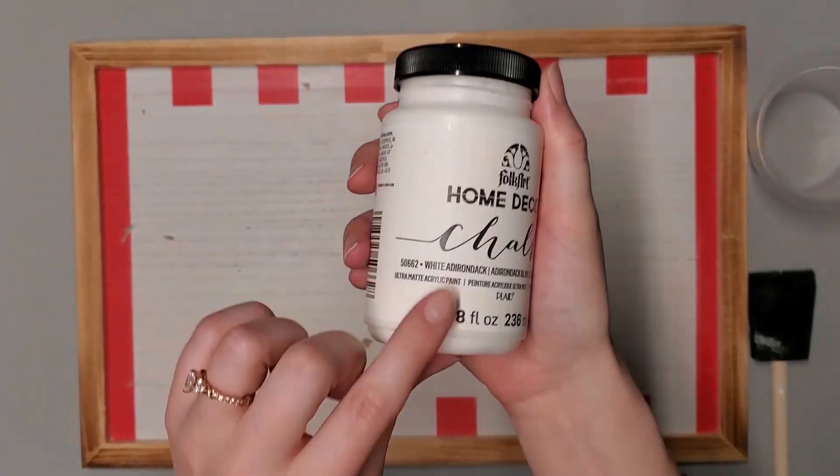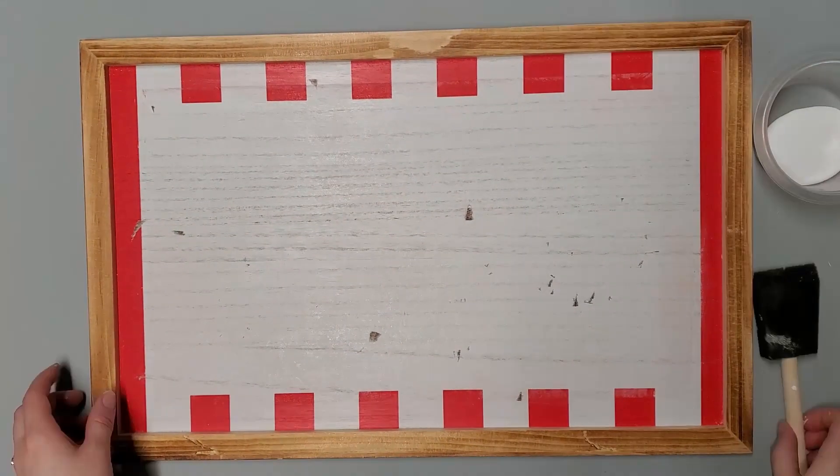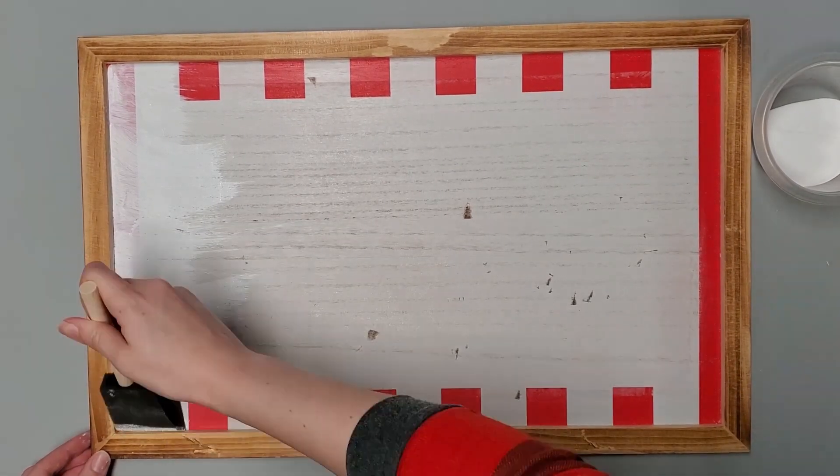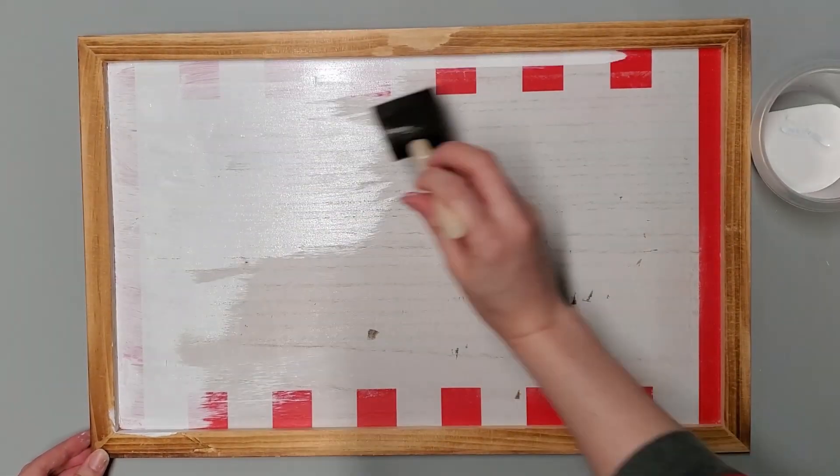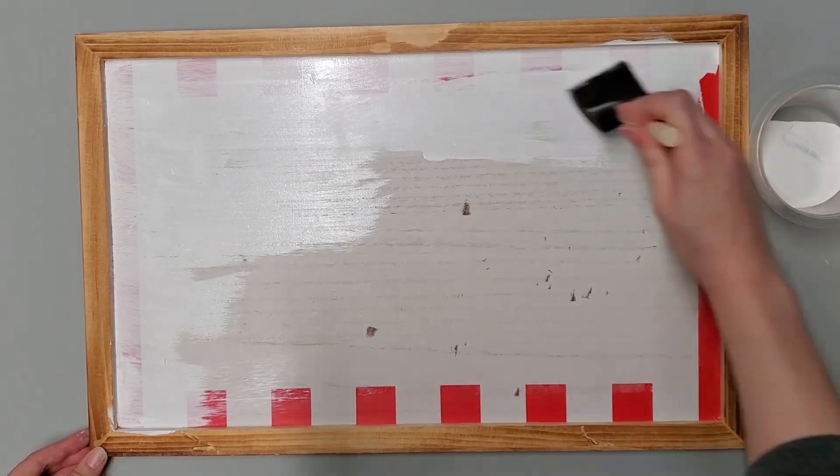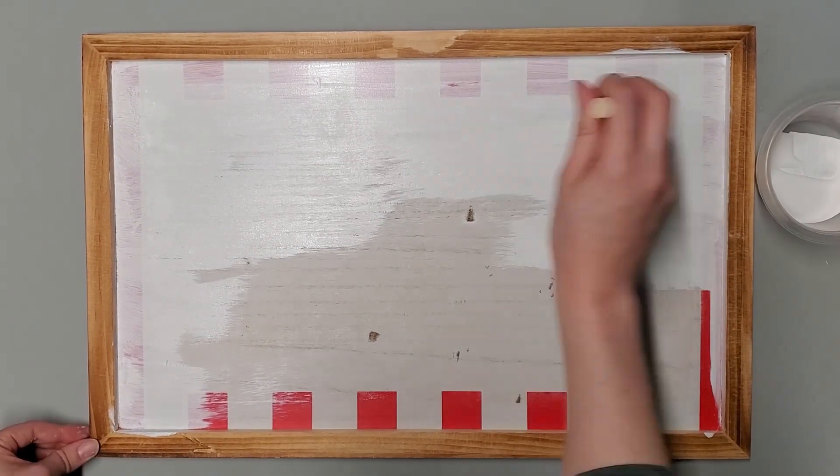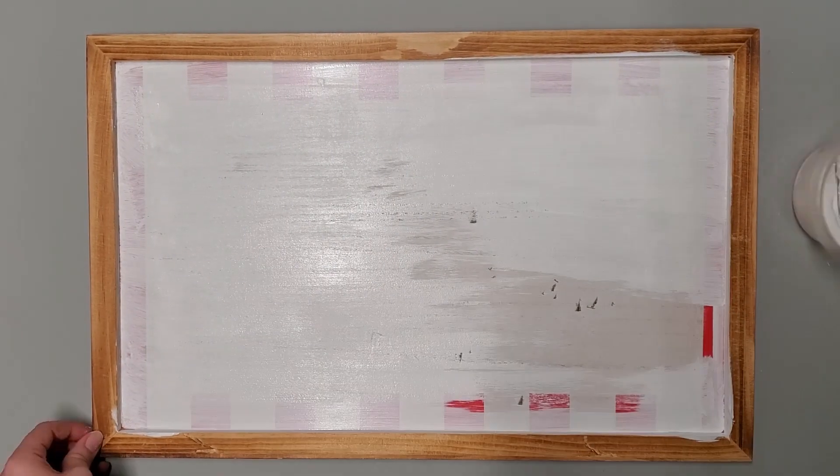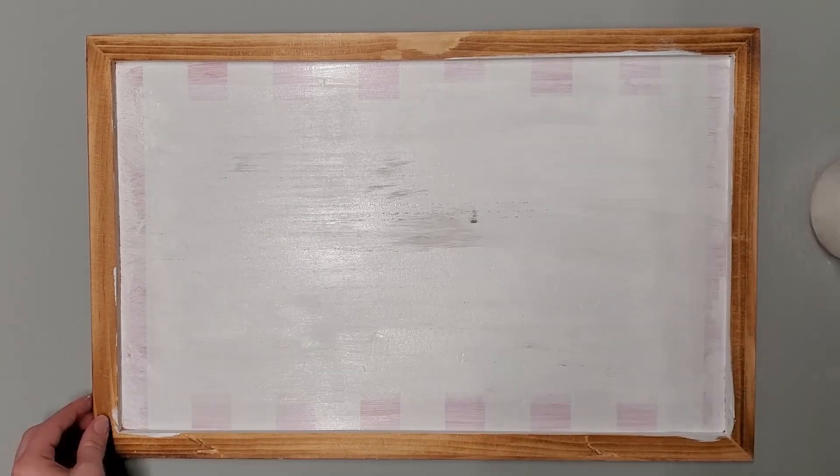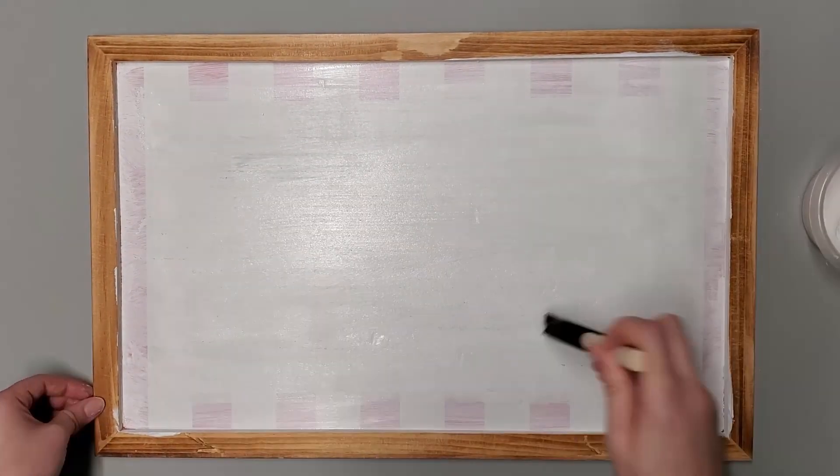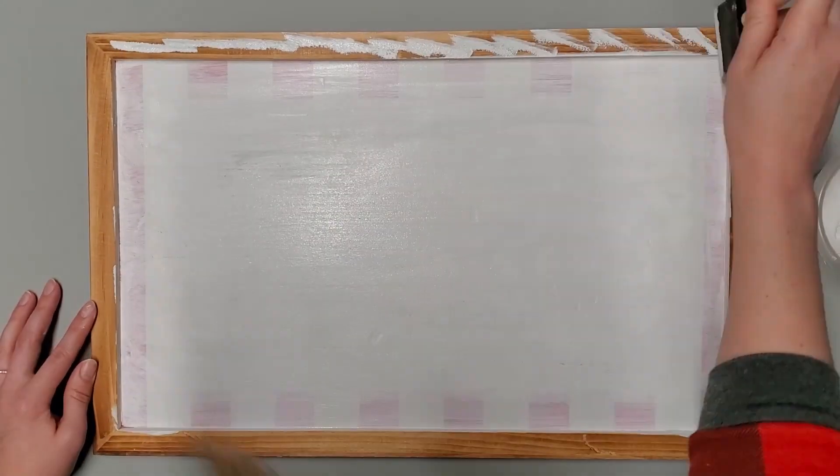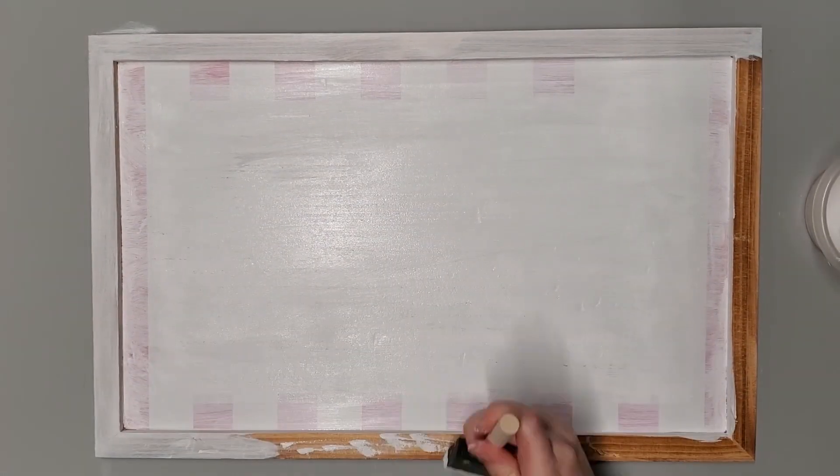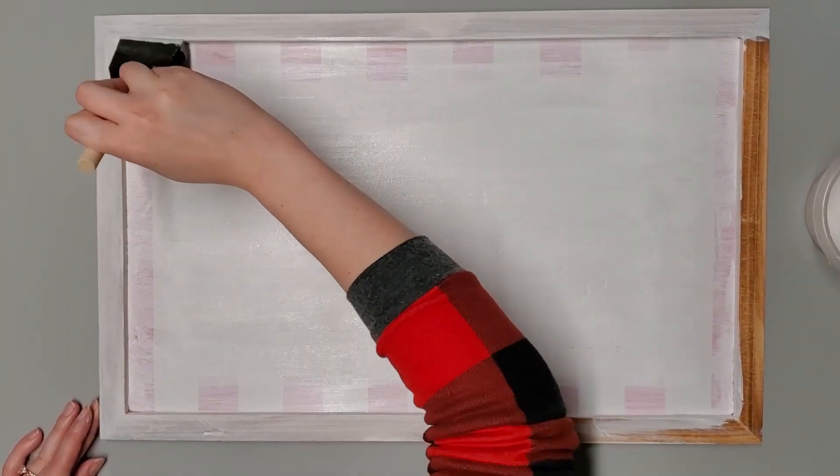I'm using this white chalk paint by FolkArt, the white Adirondack. Am I just not putting enough paint on? I was expecting like a lot better coverage. Maybe I should have sanded down the red a little bit more but I ended up having to do I think three coats with the white Adirondack.